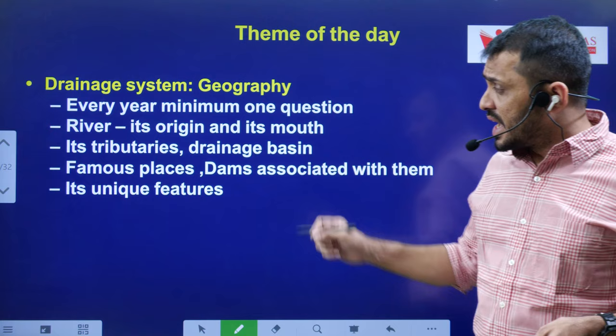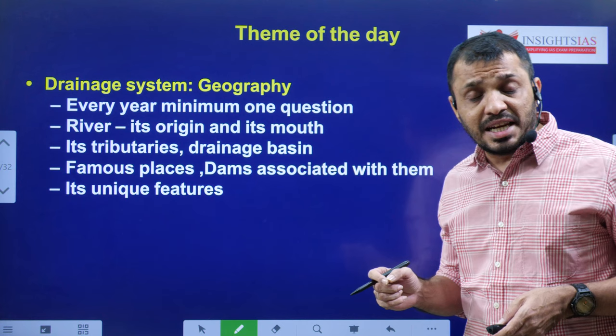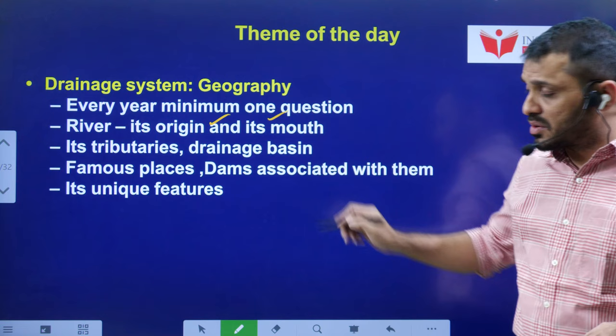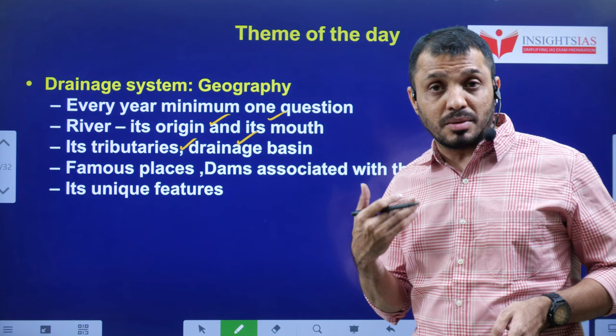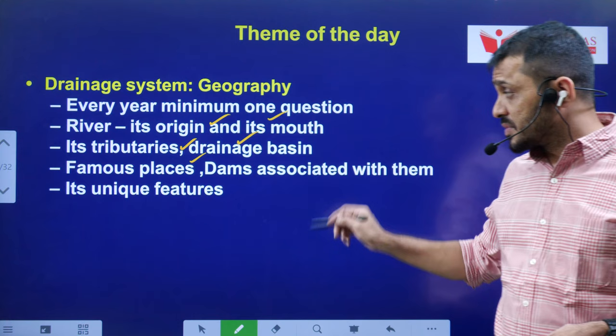Every year at least one question appears in the exam from the topic of drainage system. Mainly in this topic you have to concentrate on rivers, their origin, river mouth, and river tributaries and their drainage basins. Especially now the Kaveri river dispute is ongoing between Karnataka and Tamil Nadu, so you have to be very sure about the tributaries of river Kaveri and the famous places and dams related to that river.